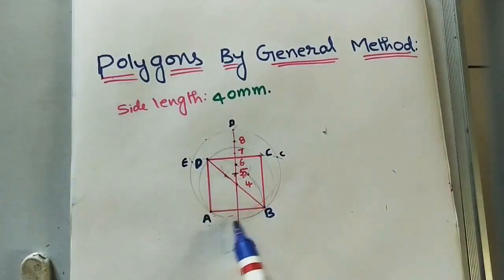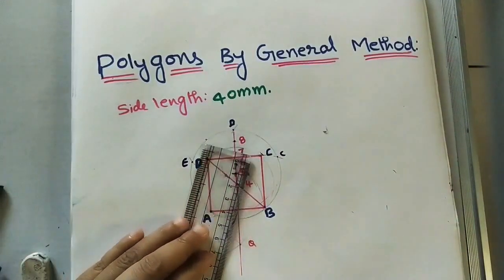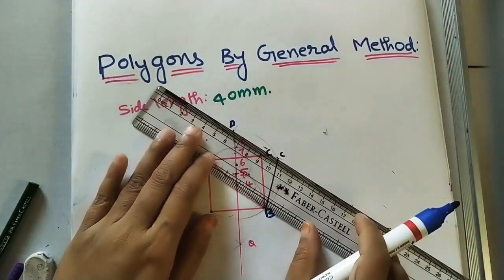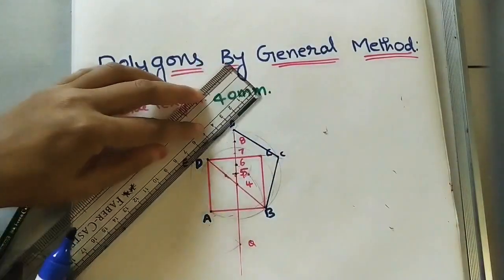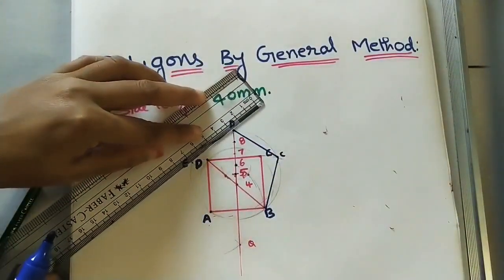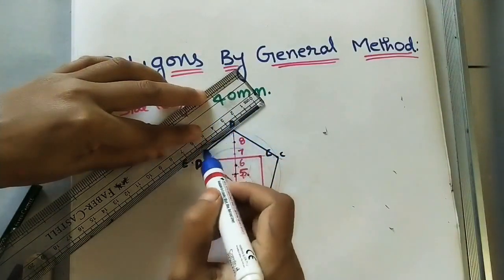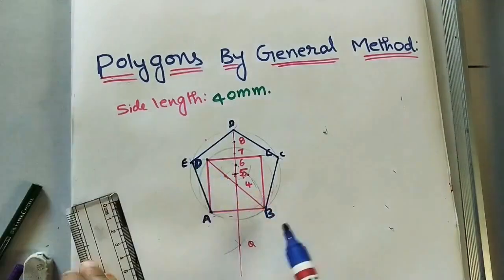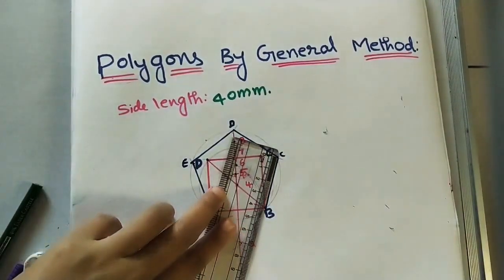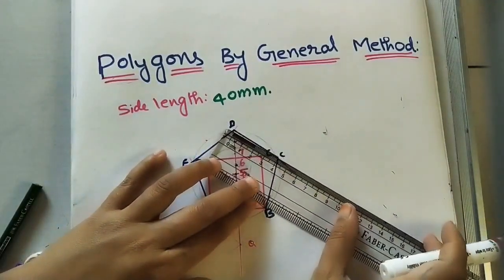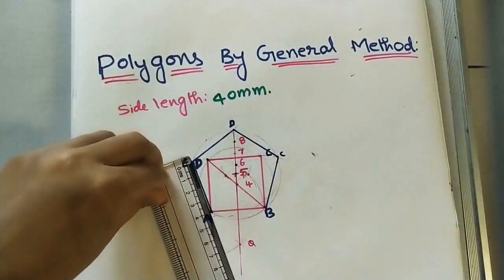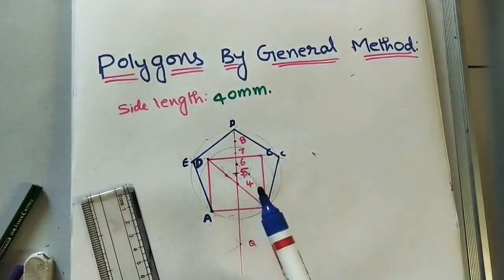Join A-B, B-C, C-D, D-E, and E-A to get the pentagon. Check whether all sides have equal length — this one is four, this one is also four, this one four, and this is also four. We have the pentagon.